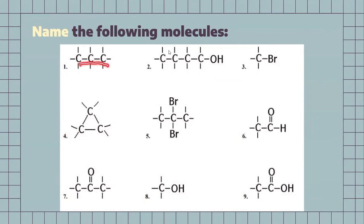We have a three-carbon chain, so we know that it's going to be an alkane. How do we call carbon chains that are three carbons long? We have a carbon chain fully saturated with hydrogens. We know that it's three carbons long, so it's going to be prop. Because it's fully saturated, it's going to be an alkane, so I'm going to call it propane.